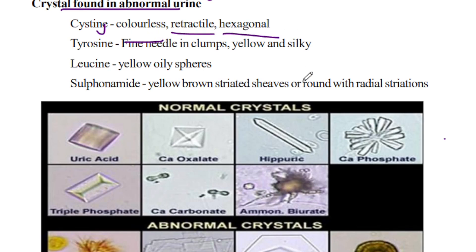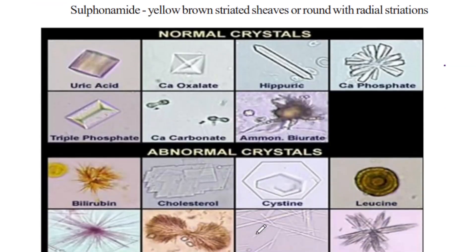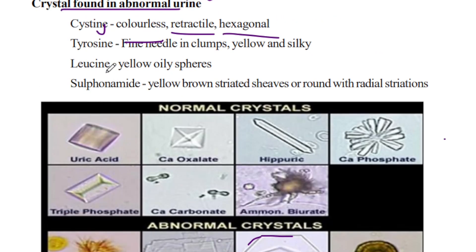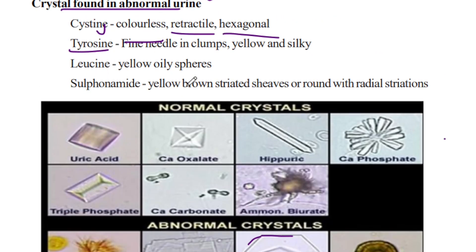Abnormal urinary crystals include cystine crystals, which are colorless, refractile, and hexagonal in shape. Tyrosine crystals also appear as an abnormal finding.